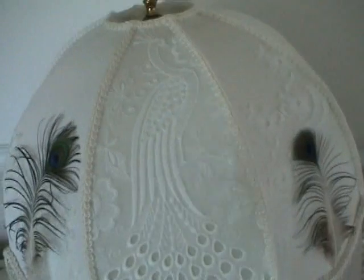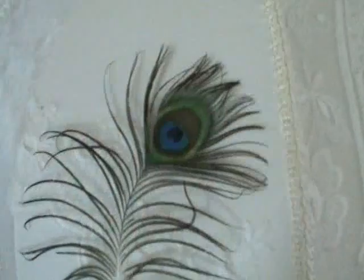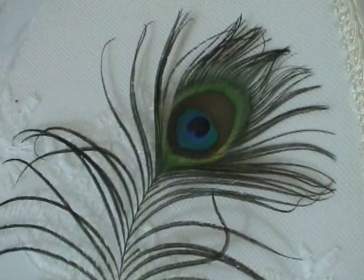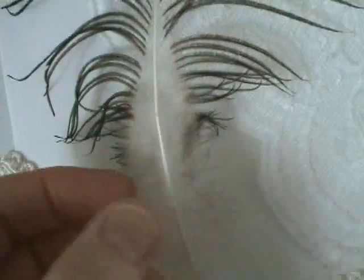The feathers of peacocks are a bit different because they are meant for visual displays rather than for flight. The bottom of the feather has the white fluffy barbs that are similar to the thermal insulation barbs of other birds.